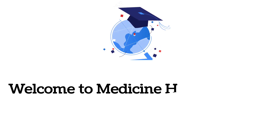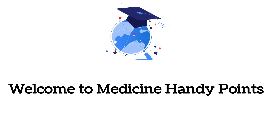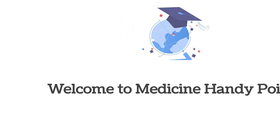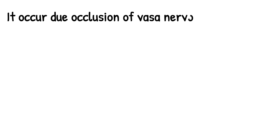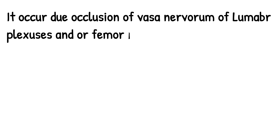Welcome to Medicine Handy Point. Today we have selected a unique topic which is diabetic amyotrophy. It occurs due to occlusion of the vasa nervorum of the lumbar plexus and/or femoral nerve. As a result, there will be findings in the lower limbs.